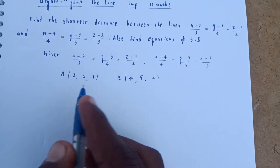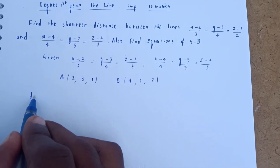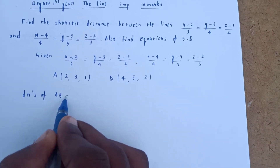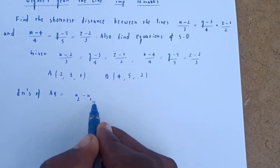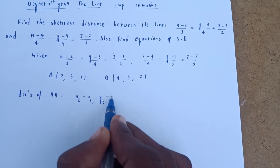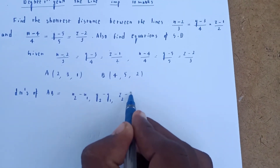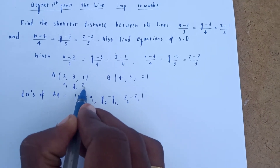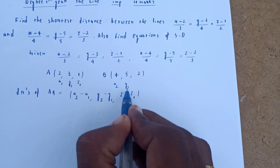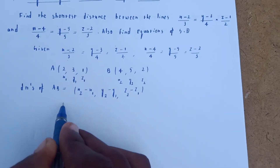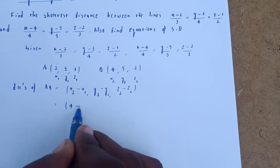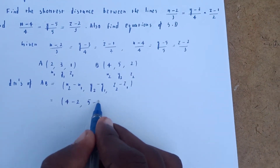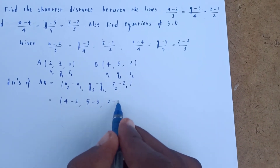Now we need to get DRs of AB. The formula is x2−x1, y2−y1, z2−z1. So x2−x1 = 4−2 = 2, y2−y1 = 5−3 = 2, z2−z1 = 2−1 = 1. Therefore DRs of AB are (2, 2, 1).